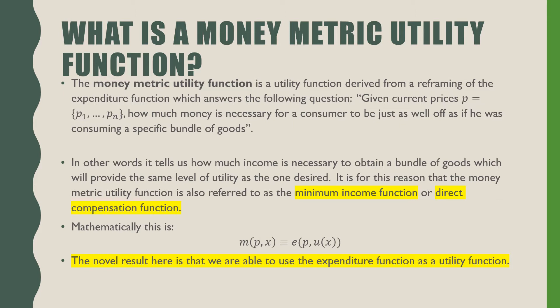Which answers the following question: given current prices p, how much money is necessary for a consumer to be just as well off as if he was consuming a specific bundle of goods?